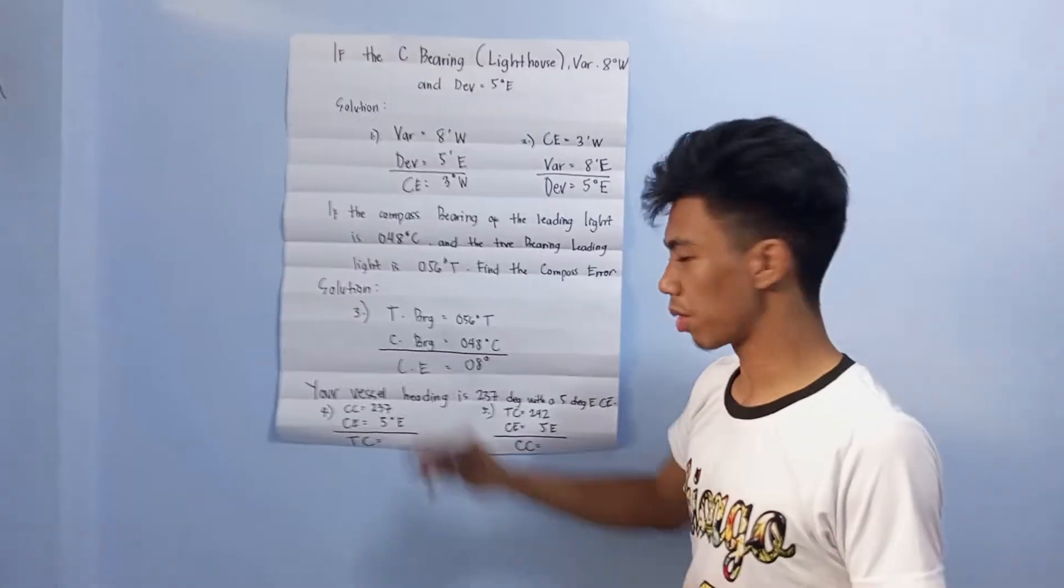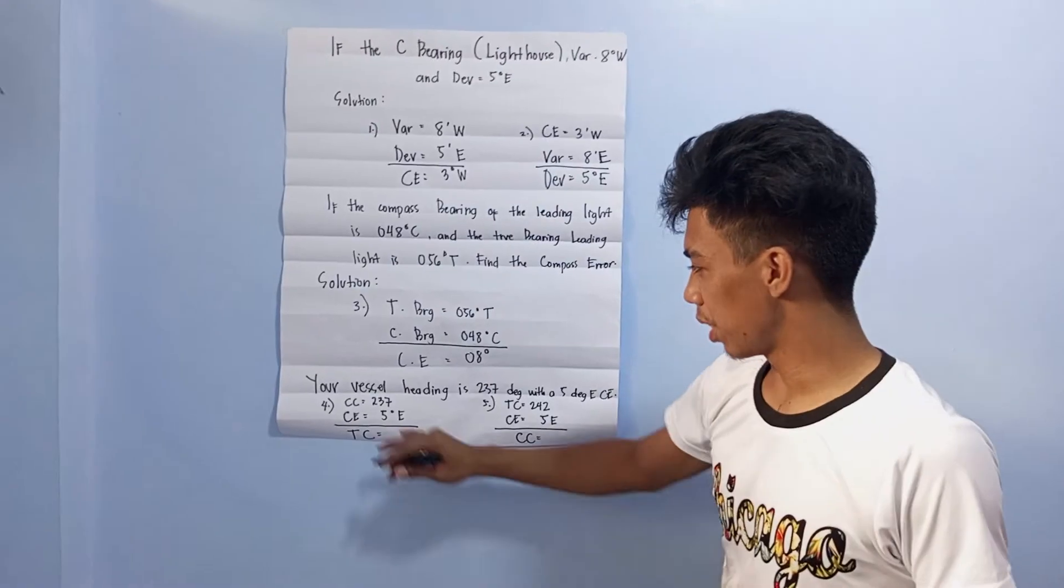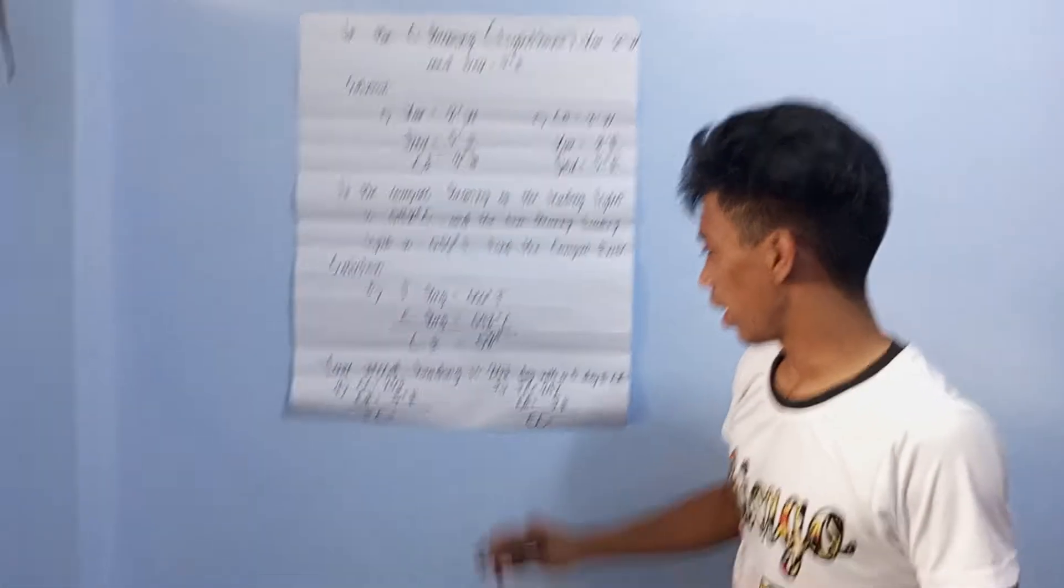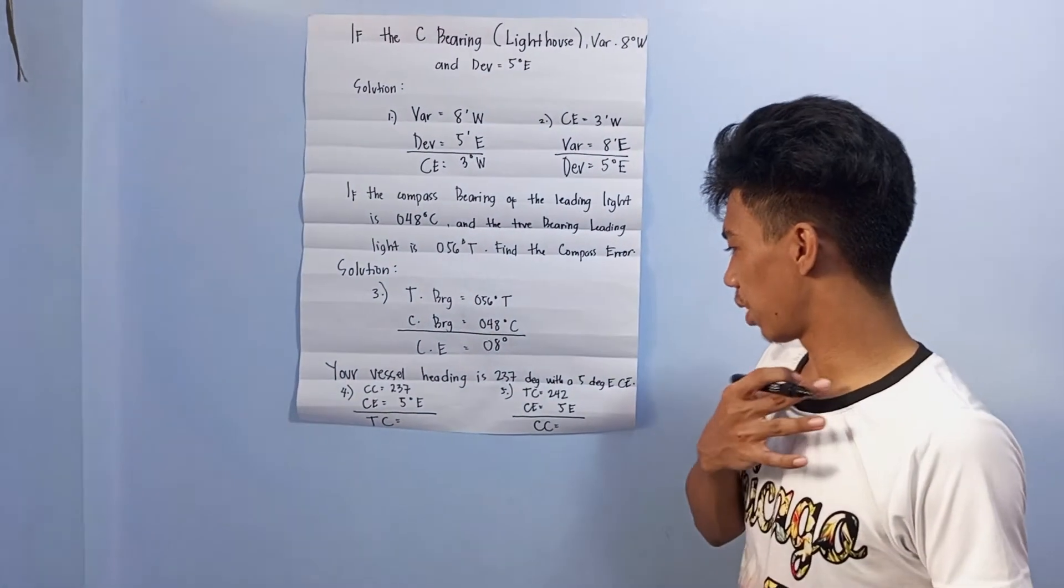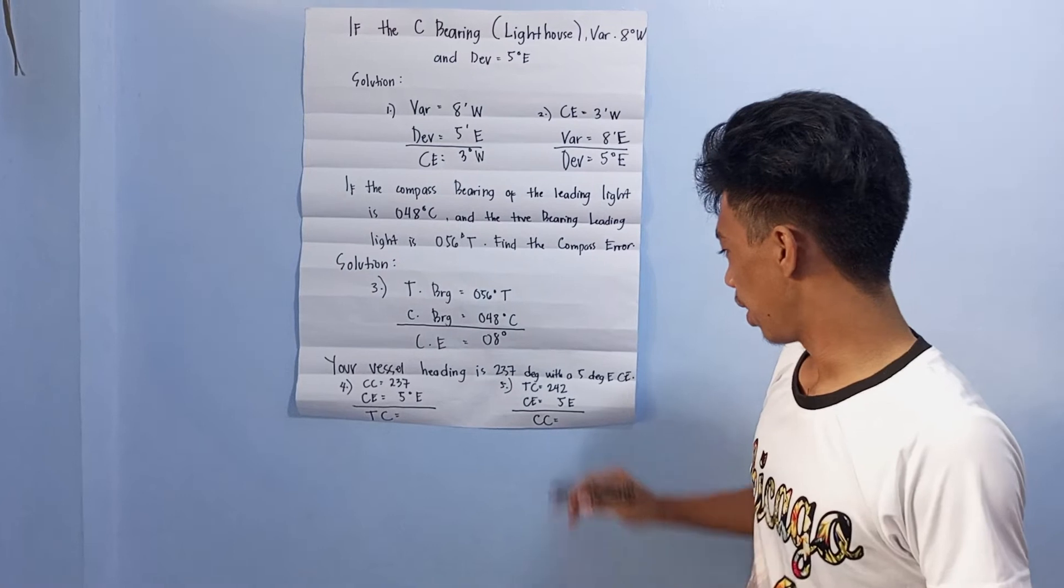Fourth question: your vessel heading is 237 degrees with five degrees compass error.